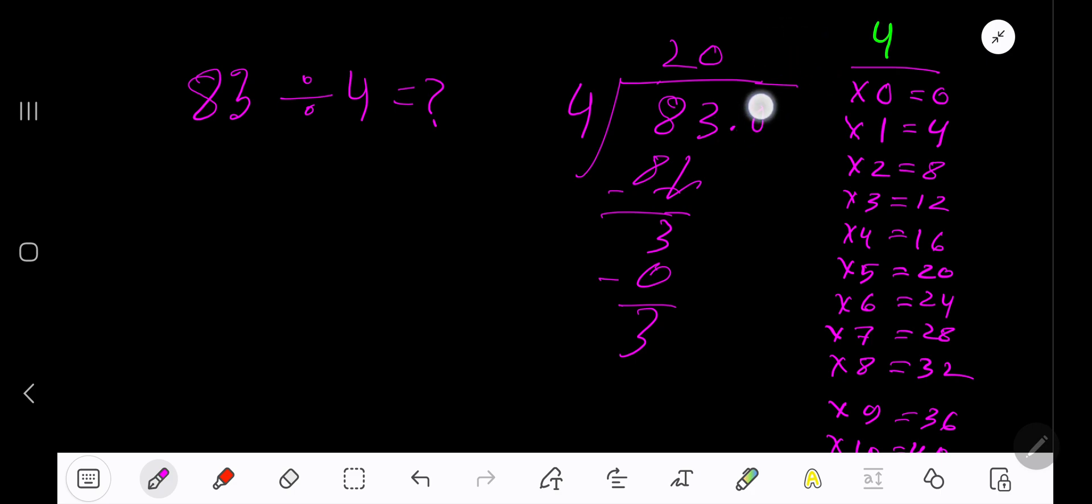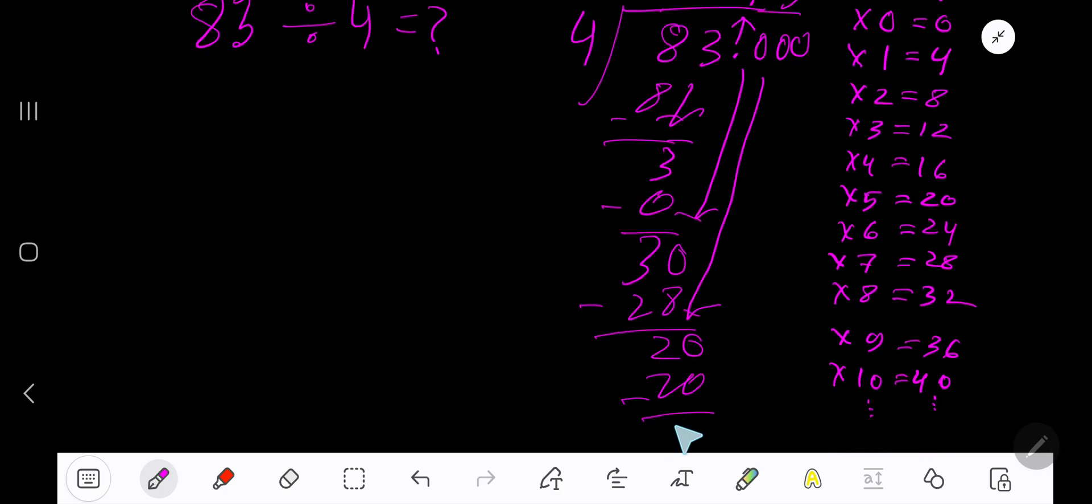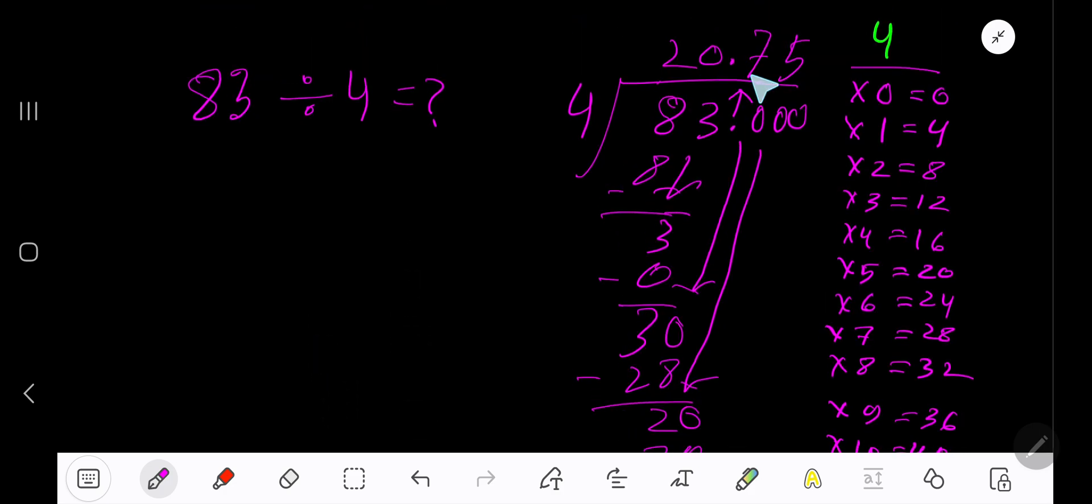If you want to write your answer in decimal form, add a decimal point and zeros. Bring down the first zero. The decimal must come to the quotient directly. 4 goes into 30 how many times? 8 times is 32, which is greater, so 7 times. 7 times 4 is 28. Subtract: 2. Bring down another 0. 4 goes into 20 how many times? 5 times. 5 times 4 is 20. Subtract: 0. So our answer is 20.75.